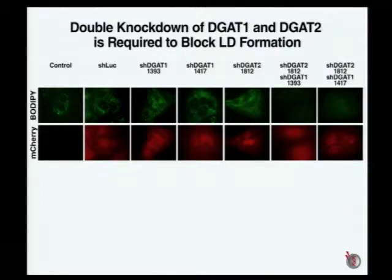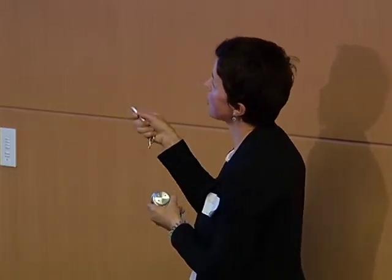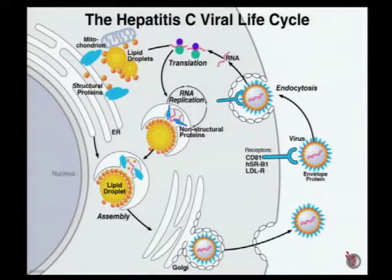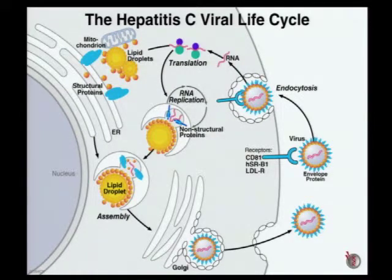When we did the knockdown experiments with DGAT-1 or DGAT-2, we saw that knockdown of either enzyme alone does not affect lipid droplet content in these hepatoma cells — meaning if we knock down one, the other can fully compensate for lipid droplet generation. However, when we knocked them both down, there were really no lipid droplets left. So we had to think about something more complex than simple elimination of lipid droplets.